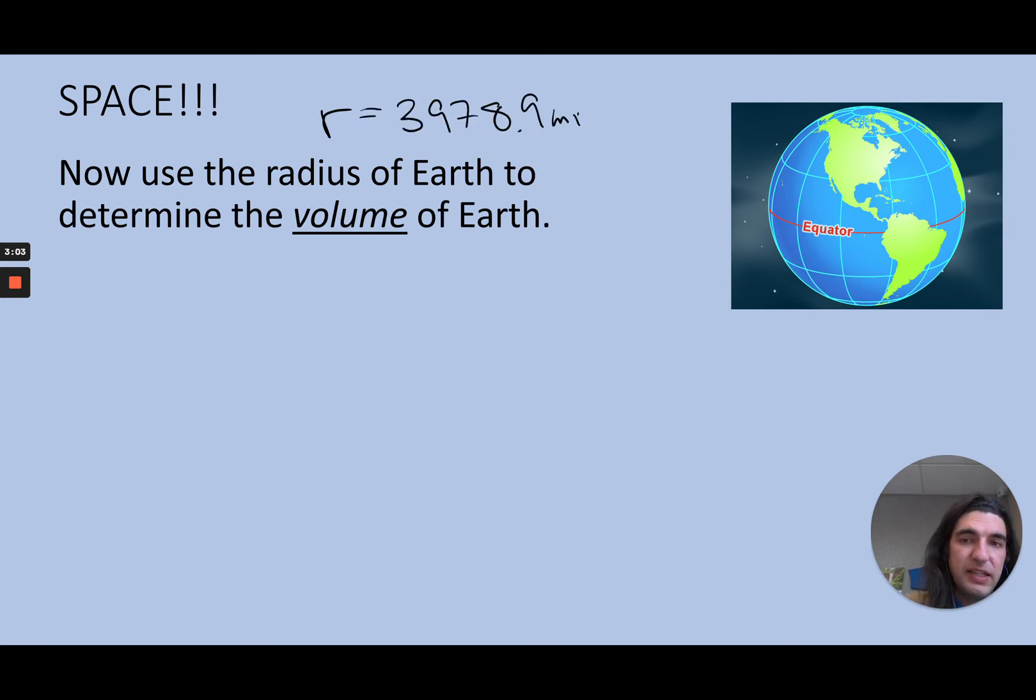Okay, now let's try and find the volume. The globe is a sphere, so volume is 4/3 πr³. Well, we have the radius, so I'll just plug in my radius 3978.9, cube that. So go 4 divided by 3 times π times 3978.9 to the third.